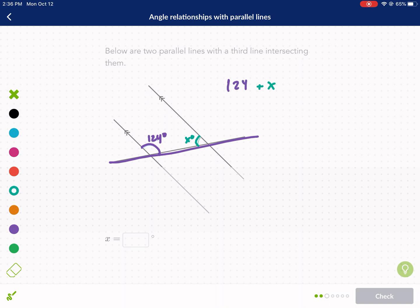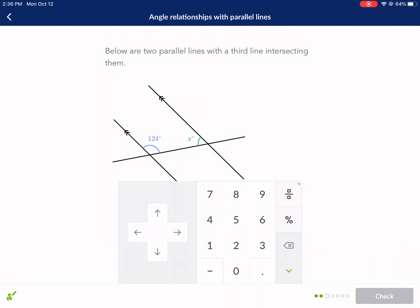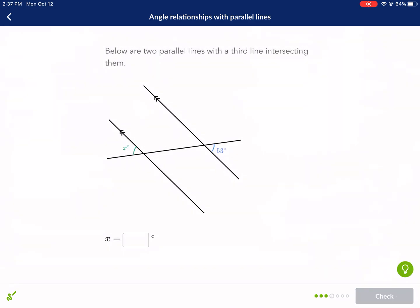So we have 124 plus X. These are not equal this time. Instead, they have the relationship where they are supplementary to each other. So essentially what I need to do is I need to subtract 124 from both sides. So I get X equals 56 degrees. So these are supplementary because they're same side interior angles.